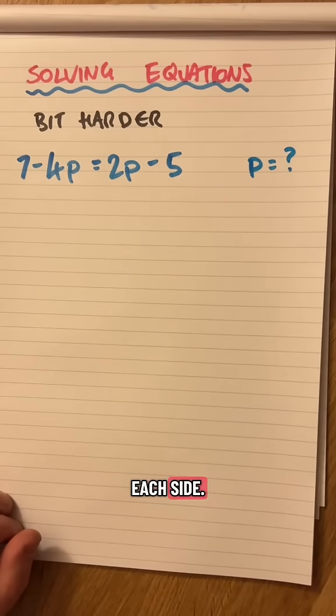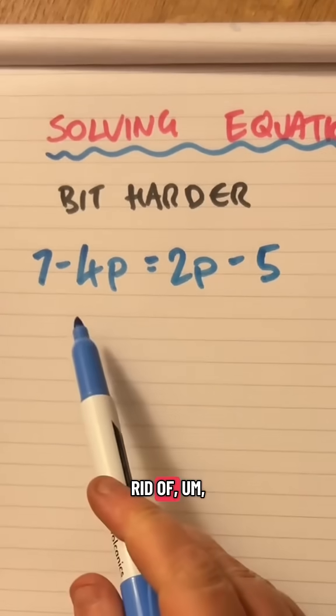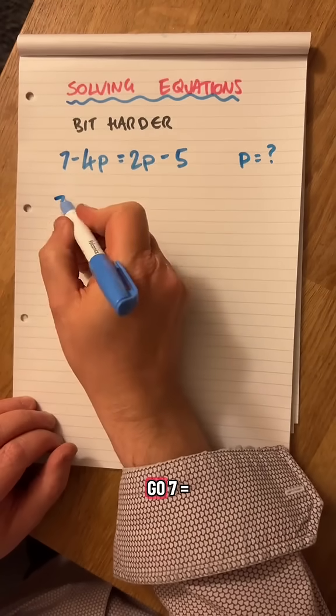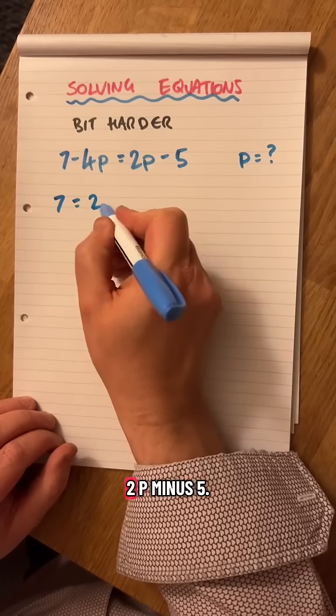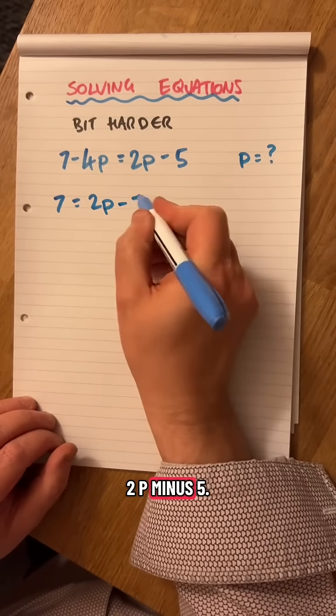I'm going to do the opposite to each side. I'm going to get rid of the 4p here, look,